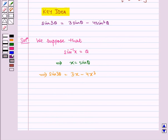Therefore, 3 theta equals sine inverse of 3x minus 4x cube.